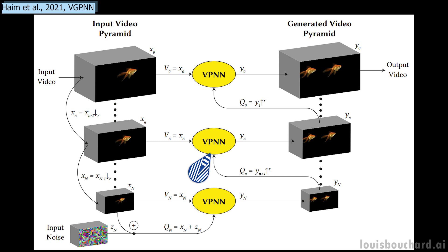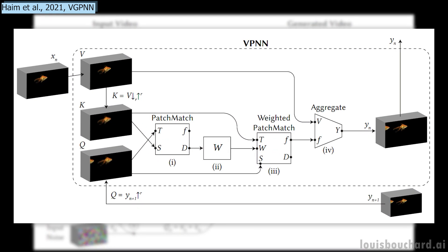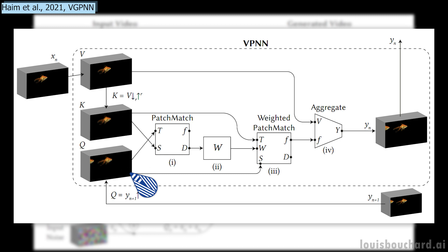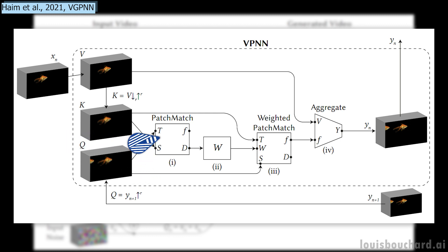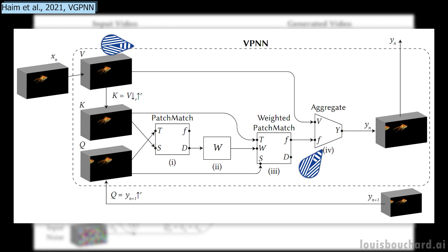Let's get into this VPNN module. As you can see here, the only difference from the initial step with noise added is that we compare the upscaled generated image, here denoted as Q, with an upscaled version of the previous image, denoted as K, just so it has the same level of details. Basically, using the level below as comparisons, we compare Q and K, and then select corresponding patches in the image from this current level, V, to generate the new image for this step, which will be used for the next iteration.